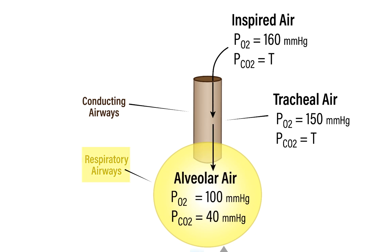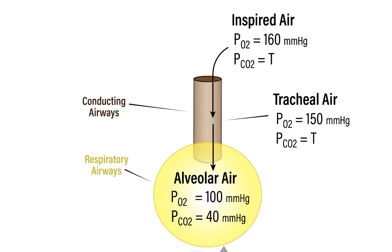Most of the air during inspiration ultimately makes its way down into the respiratory airways and mixes with the alveolar air. The partial pressure of oxygen in the alveolar air is 100 millimeters of mercury, and the partial pressure of carbon dioxide is 40 millimeters of mercury.